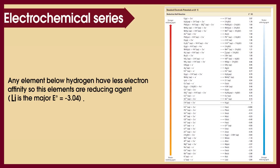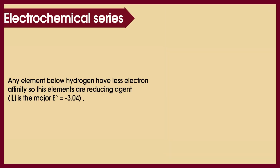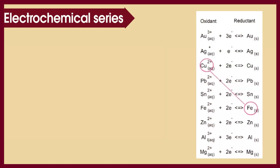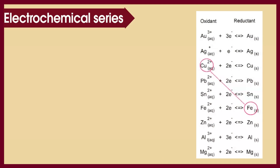We see fluorine at the top of the series — it is the most oxidizing agent — and lithium at the bottom of the series, so it is the most reducing agent. As an example with ferrous and copper: ferrous is above copper in the series, so copper oxidizes ferrous.